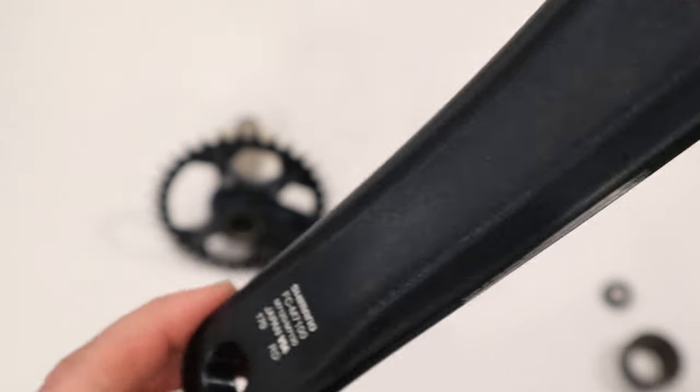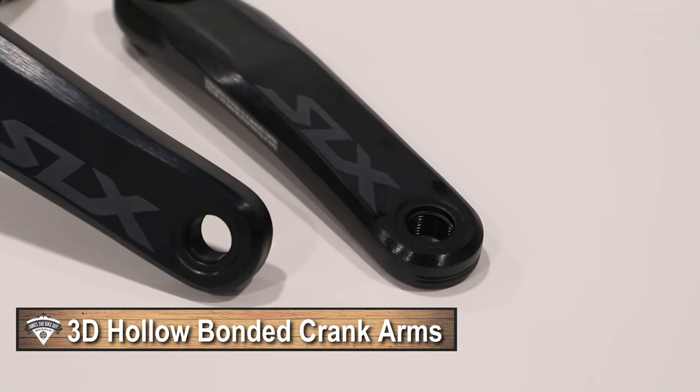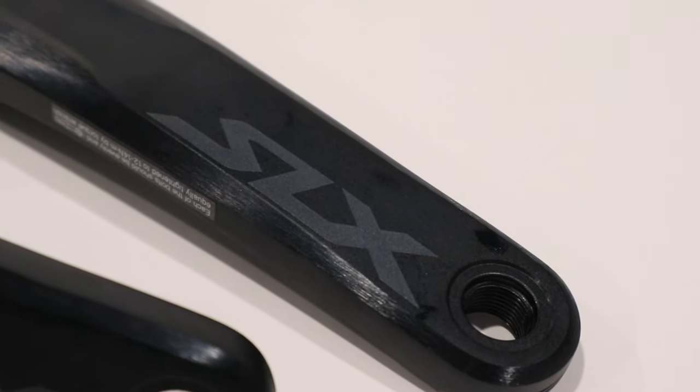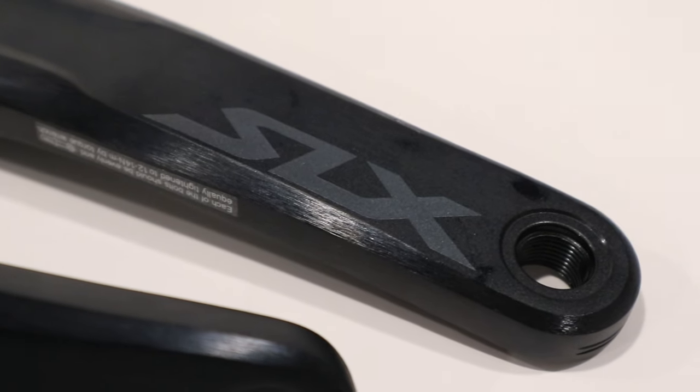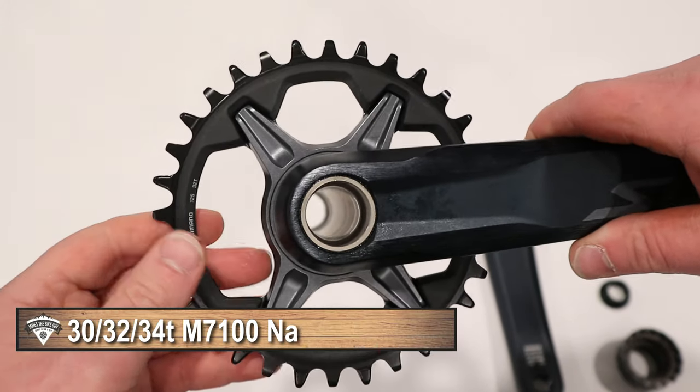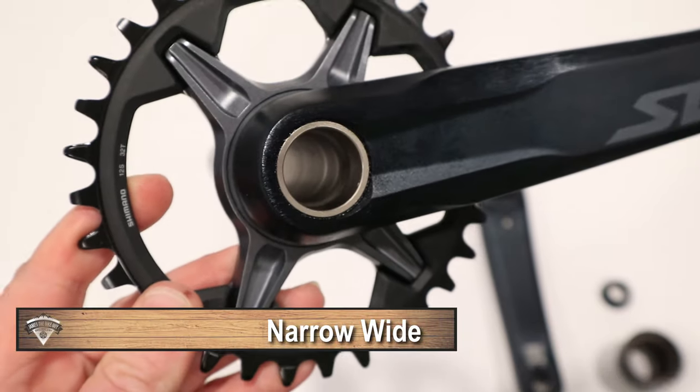These crank arms I'm looking at are going to be hollow aluminum. These are the 170-millimeter versions. They come in 165, 170, and 175. And for chainrings, if you go with the SLX version, you're going to get either a 30, a 32, or a 34 chainring.